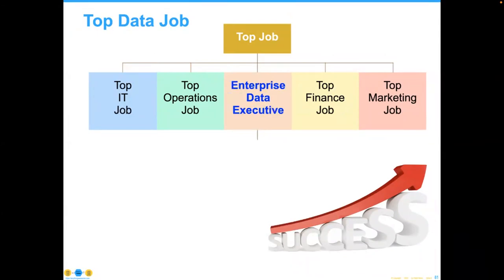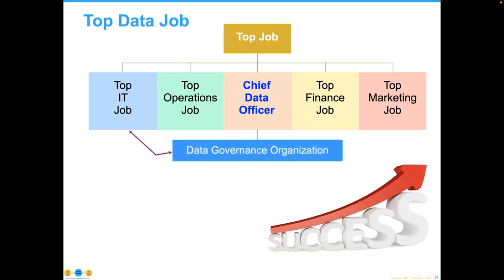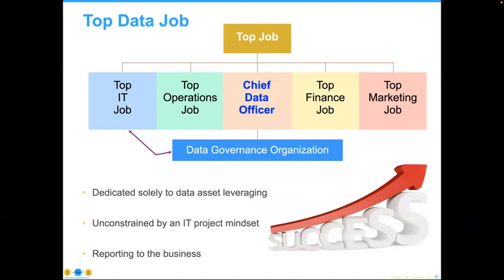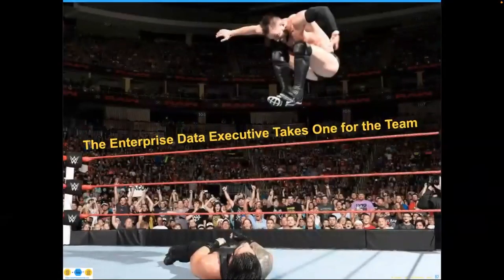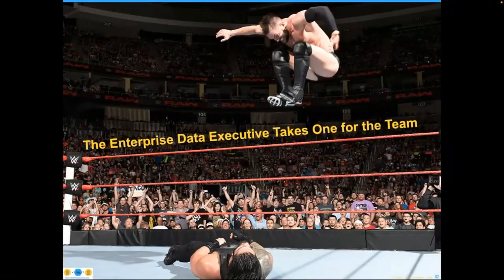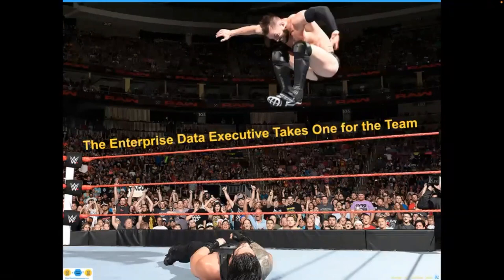Many organizations have adopted the title 'Enterprise Data Executive' — that's fine. It's known as the Chief Data Officer and is seen as responsible for data governance, primarily focusing on leveraging data assets in support of strategy, unconstrained by an IT project mindset, and reporting to the business. It's very likely the first enterprise data executive will use up all their political capital — so we're seeing many organizations rent a first enterprise data executive to make changes, then have somebody else come in and take over later.